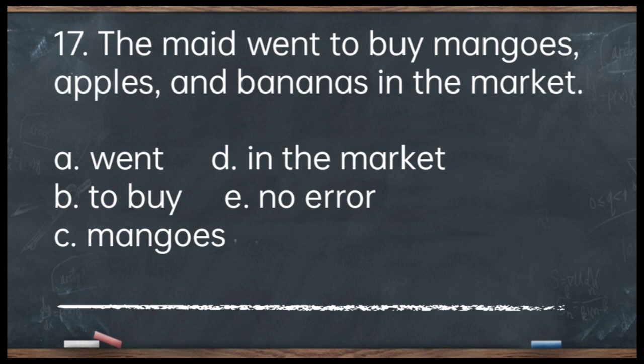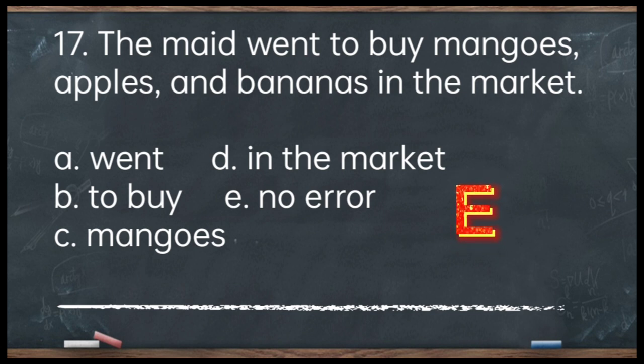Number 17. The maid went to buy mangoes, apples, and bananas in the market. A. Went. B. To buy. C. Mangoes. D. In the market. E. No error. The answer is letter E — no error. The sentence doesn't have an error.